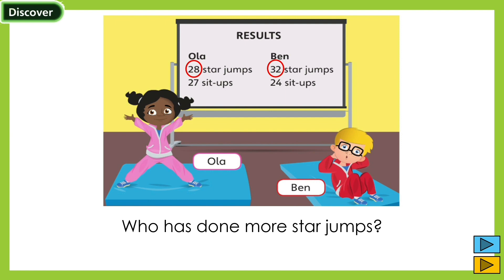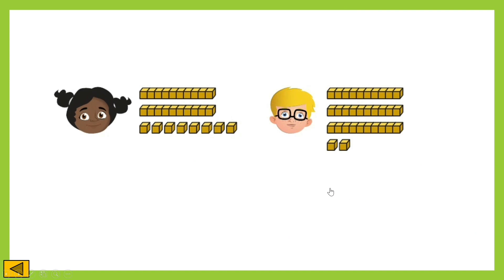So go ahead, pause this video, use your counters, and represent the number of star jumps Ola and Ben each made. I guess you're done. Have a look at my representation. Here, I used base 10 blocks to represent tens and ones of their numbers. How about you? What did you use? That's great.